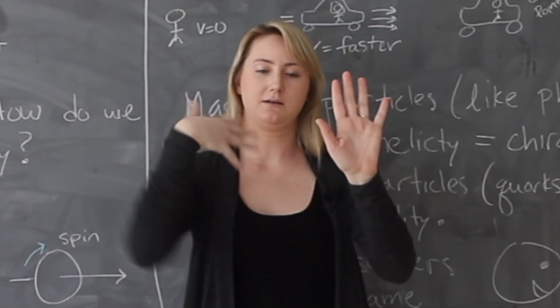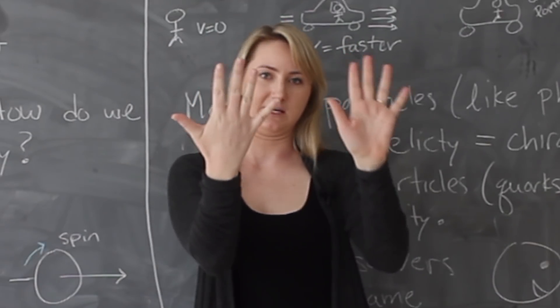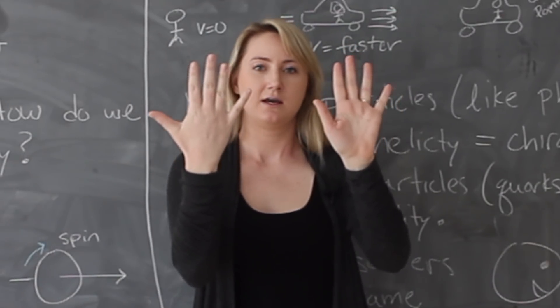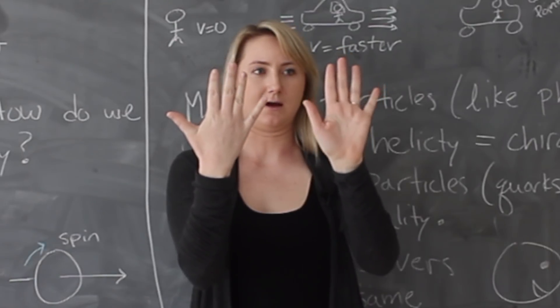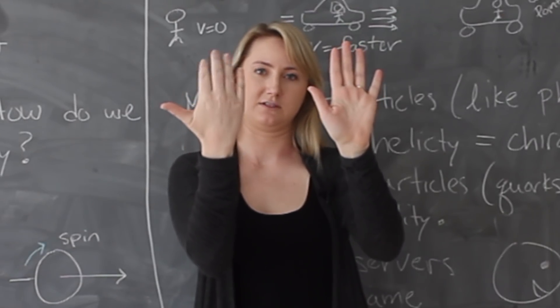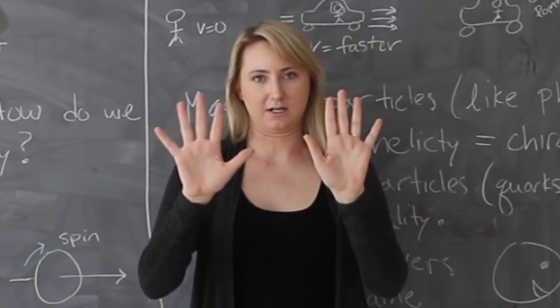For example, I can never rotate my right hand to look like my left hand. I can get close by doing this, but you can see that they're still not the same. My left hand goes this way when I wave, and my right hand goes this way. So these objects are chiral.